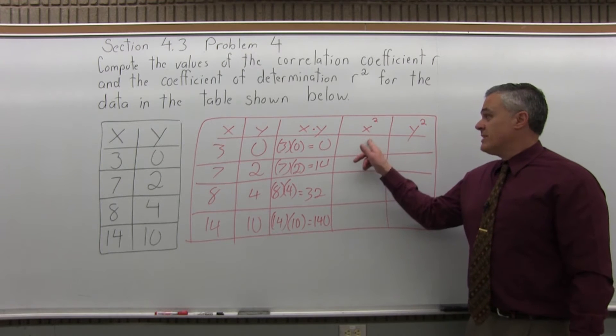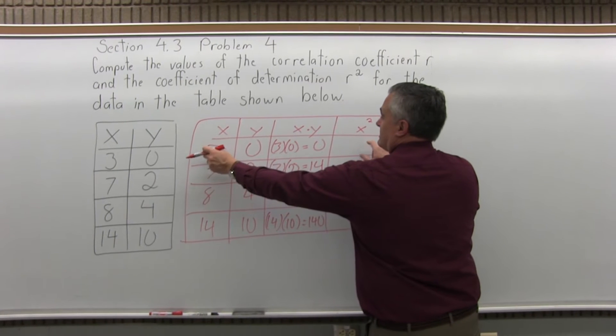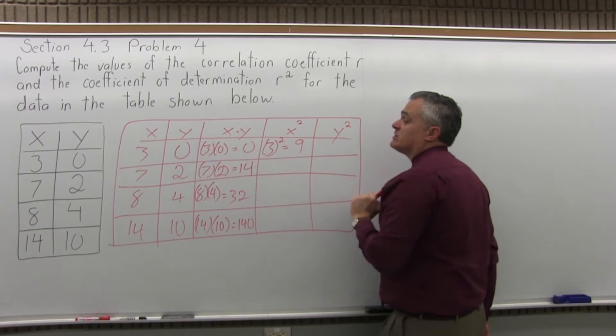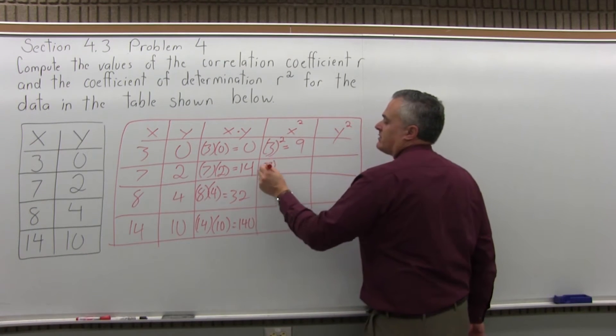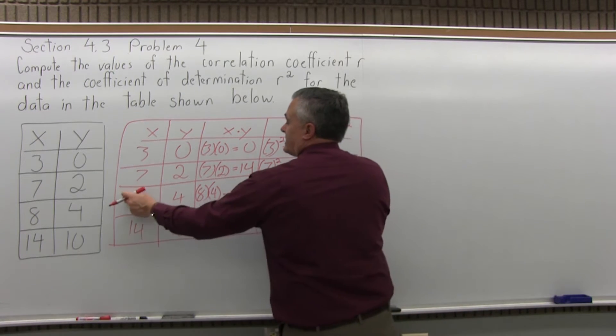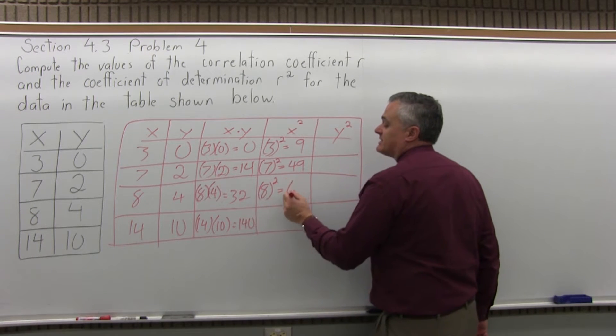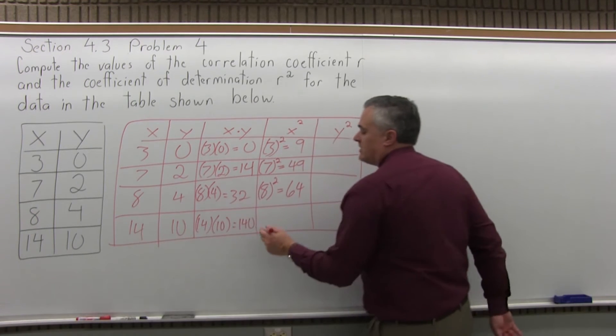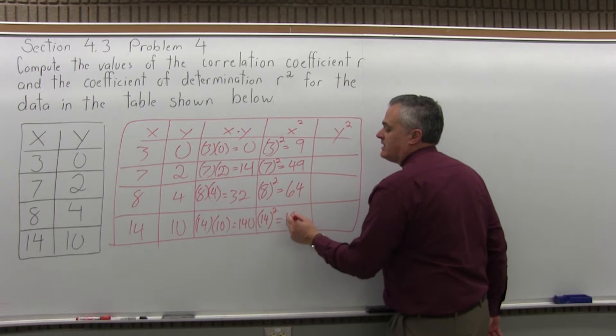Next, x to the second power. Make sure you're taking the values of x, not the column right next to you. In the top row, x is 3, so x squared is 3 times 3, which is 9. The next value of x is 7, so x squared becomes 7 squared, 7 times 7, which is 49. The next value of x is 8, so x squared is 8 times 8, which is 64. And finally, the last value of x is 14, so x squared will be 14 times 14, which is 196.